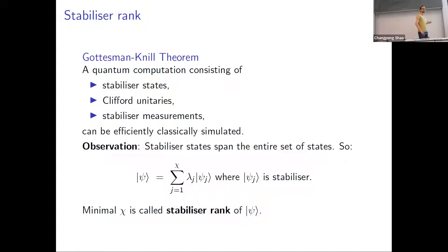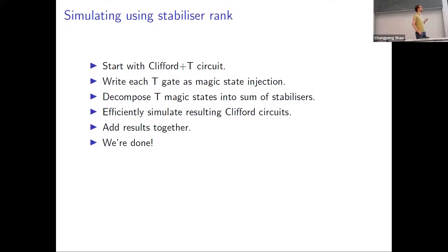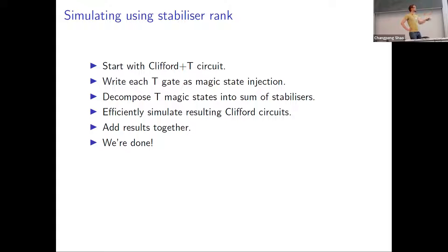This is interesting because it leads to a strategy for circuit simulation. Suppose we start with a Clifford plus T circuit — an approximately universal gate set. We write each T gate as a magic state injection using the standard gadget, making our circuit a Clifford circuit with ancillas prepared in a T magic state. We decompose these T magic states as a sum of stabilizer states, meaning our entire computation becomes a sum of Clifford computations. We can efficiently simulate each of these and add the results together.